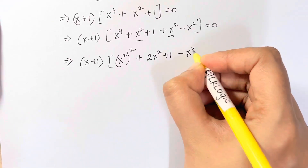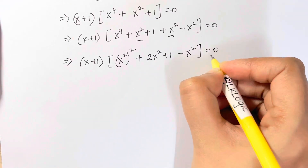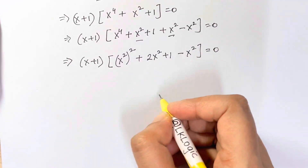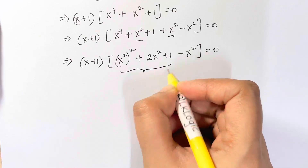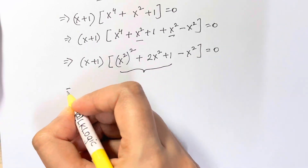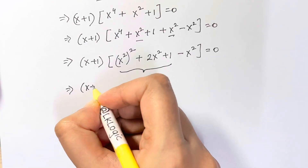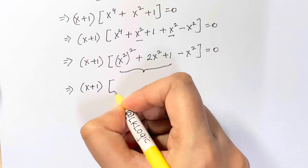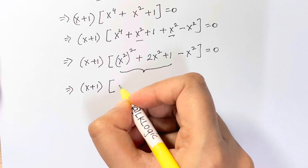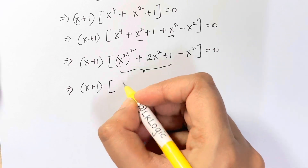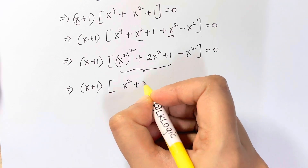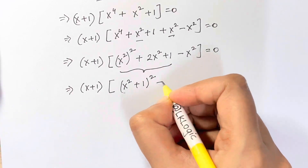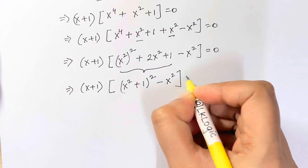The expression (x²)² + 2x² + 1 fits the identity (a+b)², so it equals (x²+1)². We now have (x²+1)² - x² = 0, which is in the form a² - b².